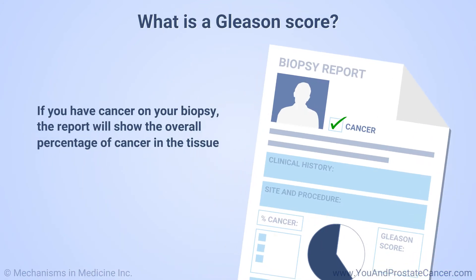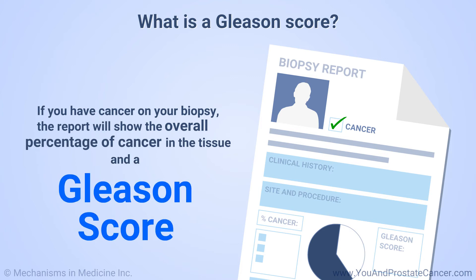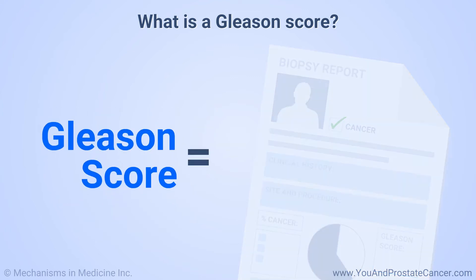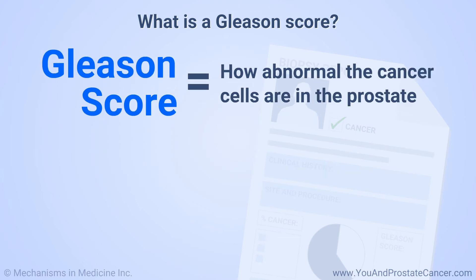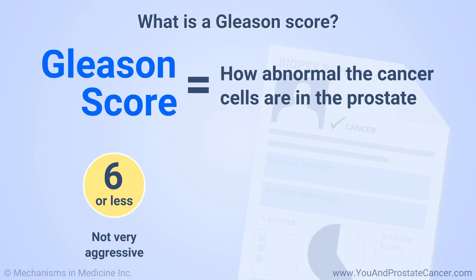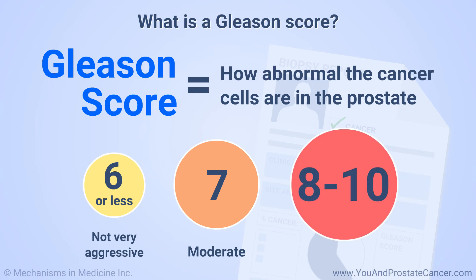If you have cancer on your biopsy, the report will show the overall percentage of cancer in the tissue and a Gleason score. This score tells your doctor how abnormal the cancer cells are in the prostate. Gleason scores go from 6 to 10. A Gleason score of 6 is not very aggressive, 7 is moderate, and 8 through 10 are considered aggressive.